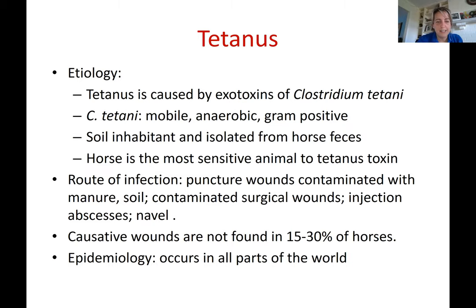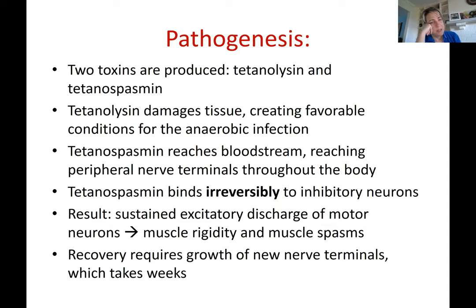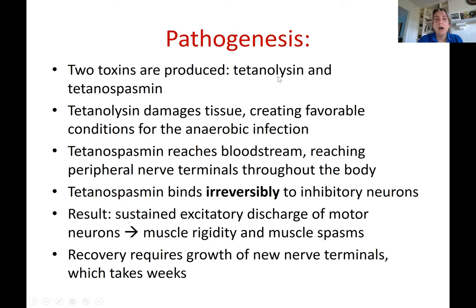The disease occurs everywhere in the world. There are two toxins produced — you must memorize these: tetanolysin and tetanospasmin. Tetanolysin damages tissue, creating favorable conditions for anaerobic infection. Tetanospasmin creates spasms.